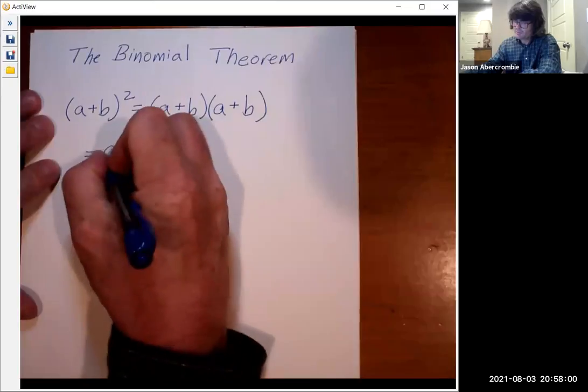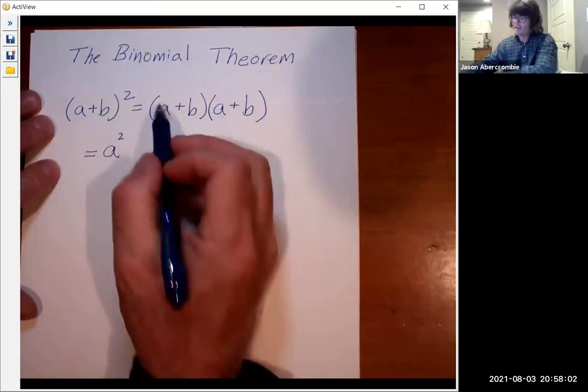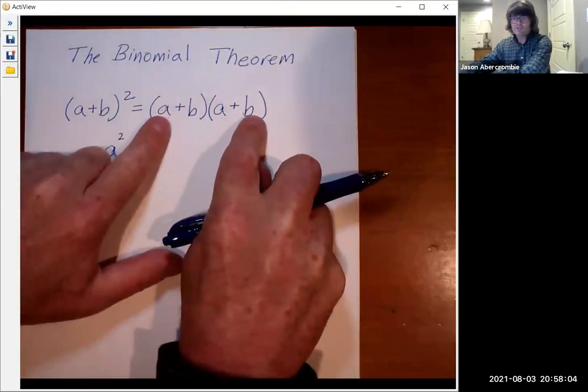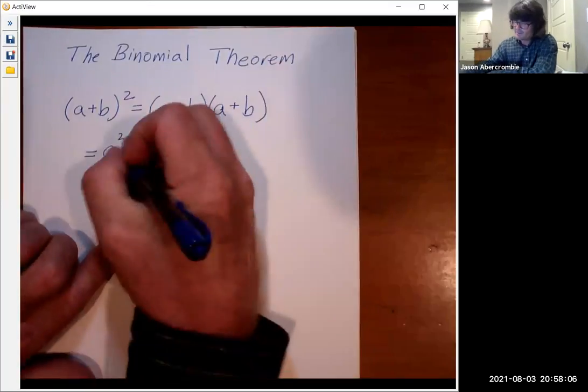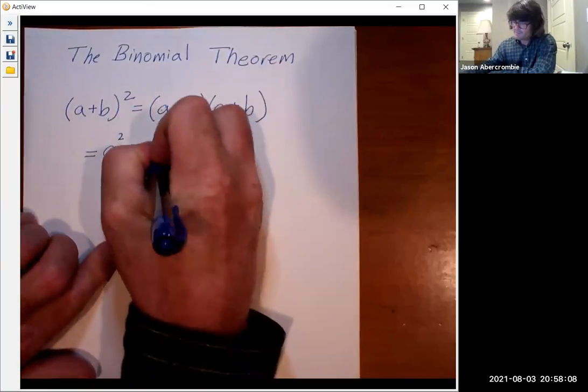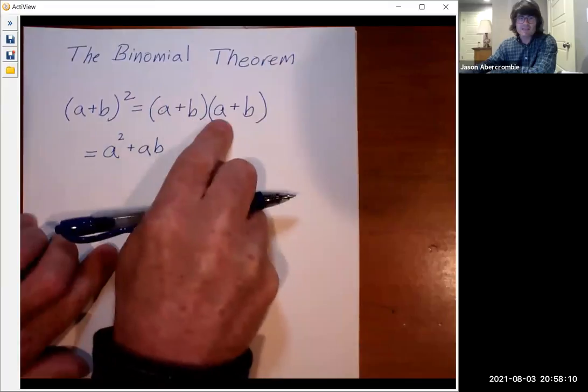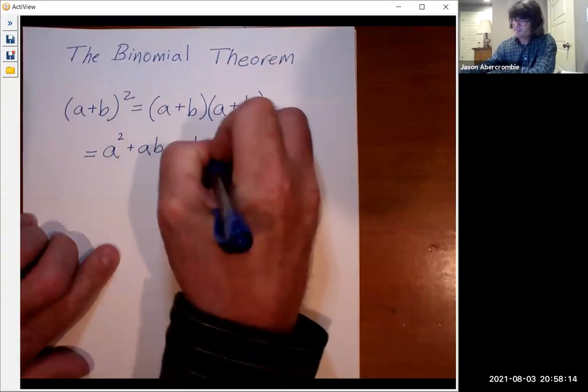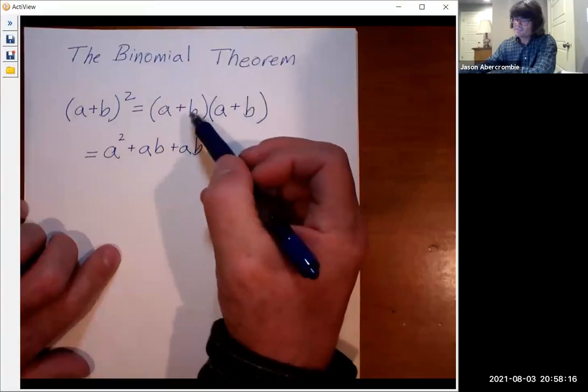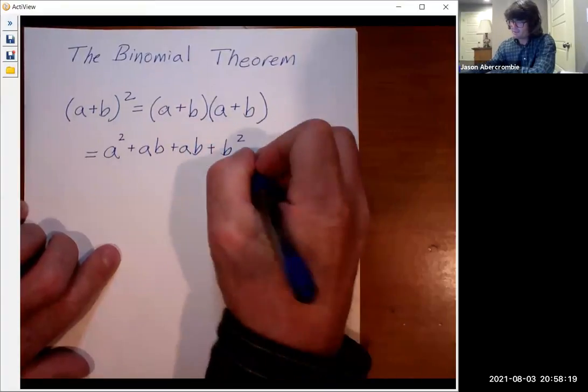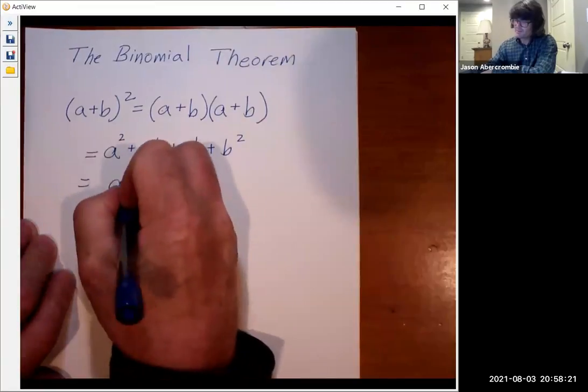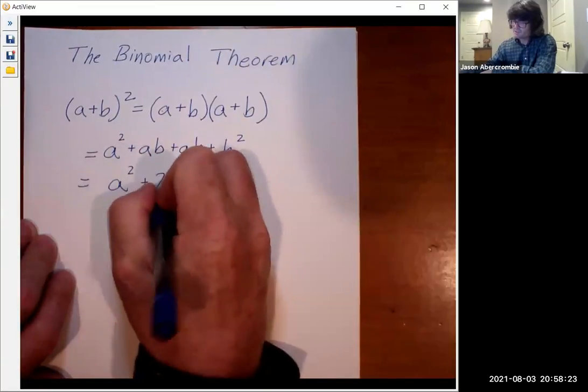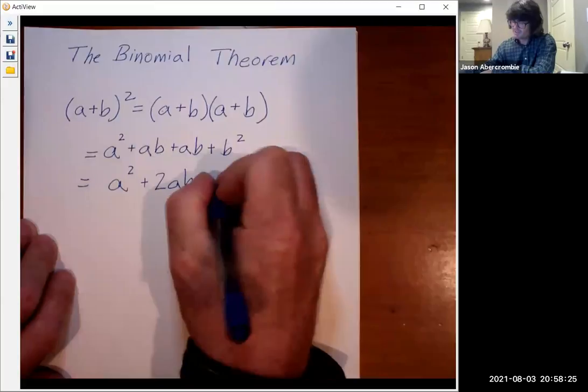So a times a is a². The outer terms, O is for outer, a times b makes ab. The inner is b times a. Another ab. And then the last is b times b, it's b². So that is a² plus 2ab plus b².